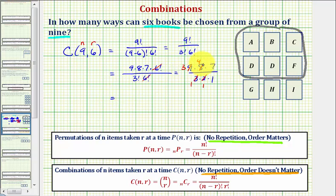So this leaves us with three times four times seven, which equals eighty-four. So there are eighty-four ways that six books can be chosen from nine books.